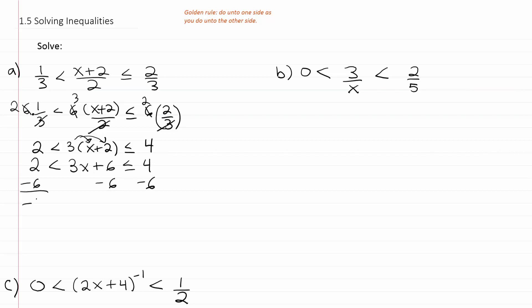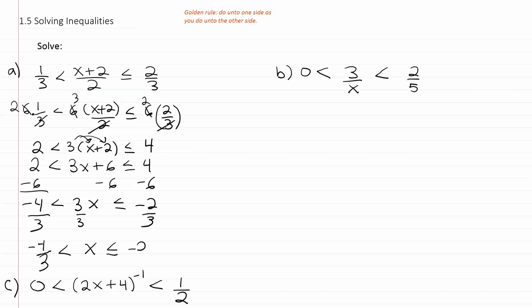We'll get negative 4 is less than 3x, which is less than or equal to negative 2. And then we divide everything by 3 in the inequality, so we get negative 4/3 is less than x, which is less than or equal to negative 2/3.